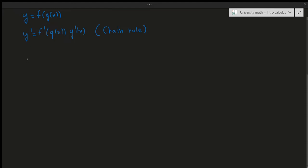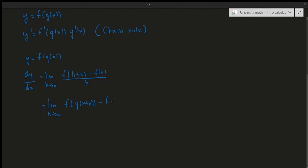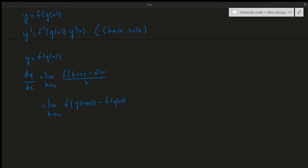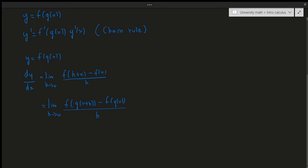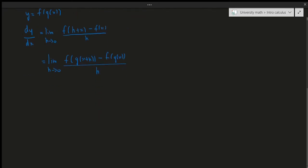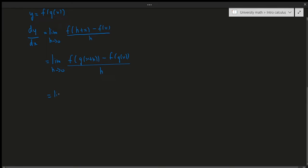Suppose I have y equals f of g of x. That means dy over dx, the derivative, is equal to the limit as h approaches zero of f of g of x plus h minus f of g of x, all divided by h. Now, the next part I'm going to do is a little bit unusual, and it might seem strange at first, but I promise that the ideas will work out.